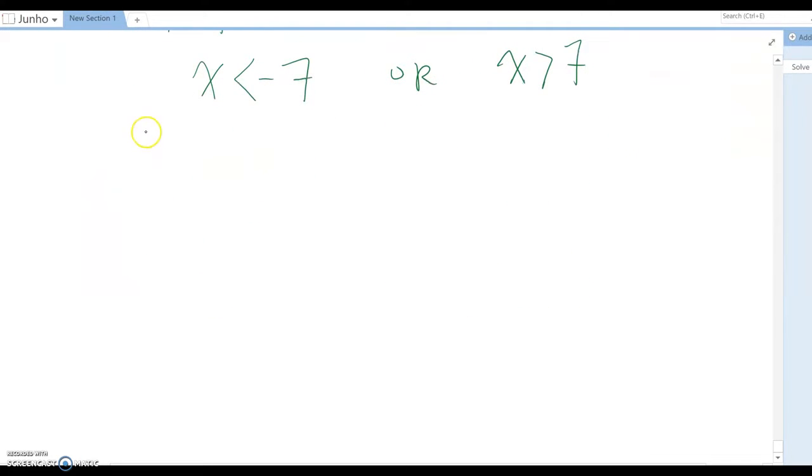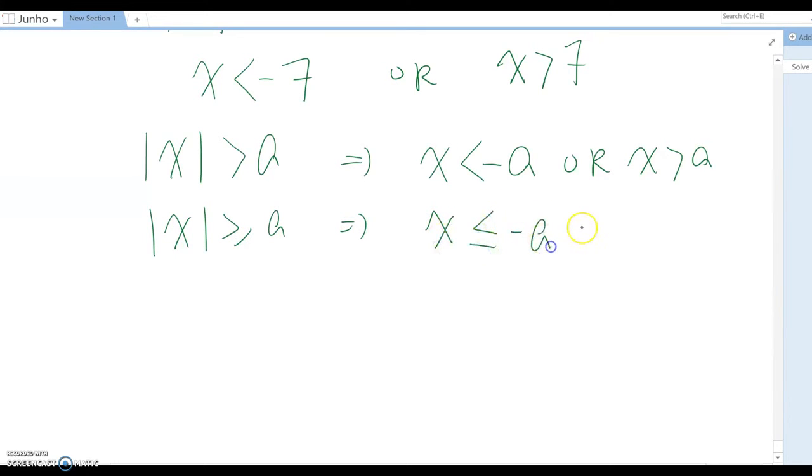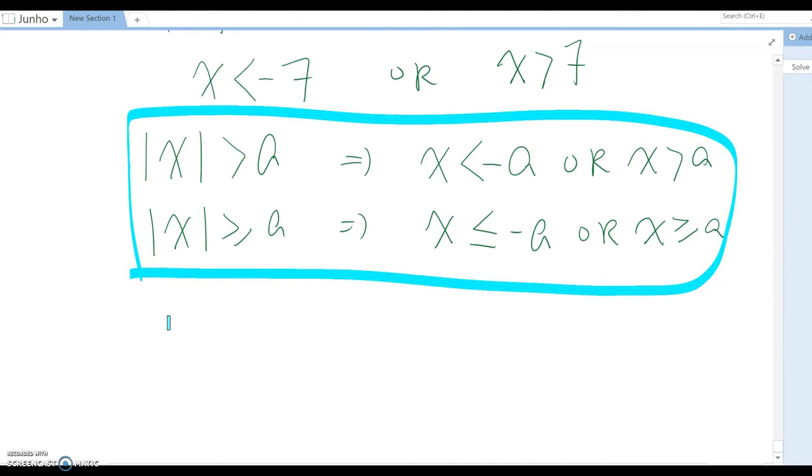So generalization. If we have absolute x is bigger than a, then x is less than negative a or x is bigger than a. That's the general concept of the absolute value inequality.